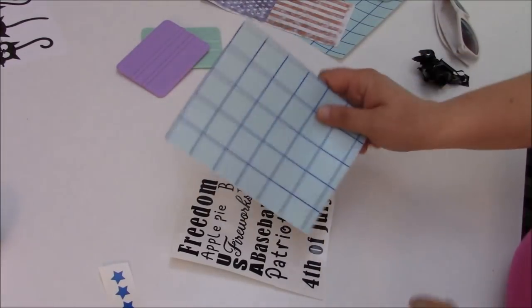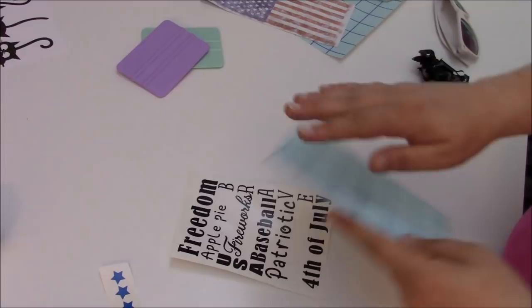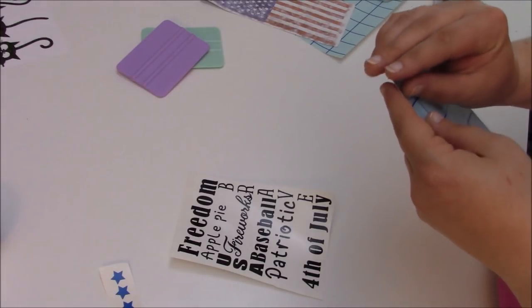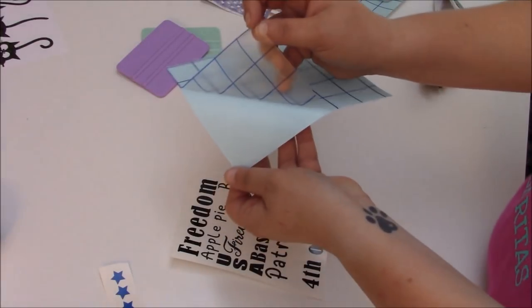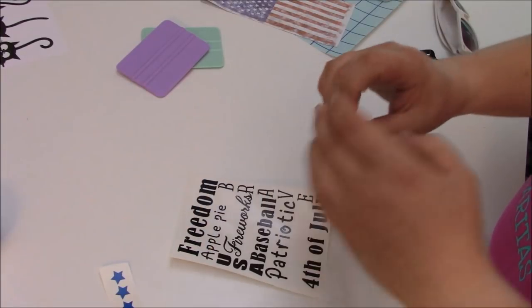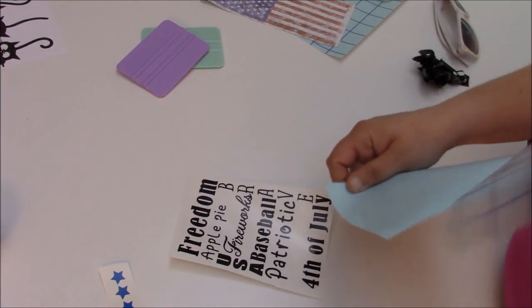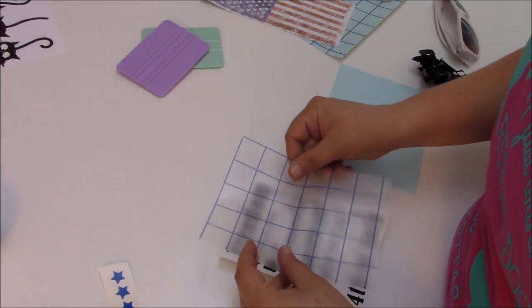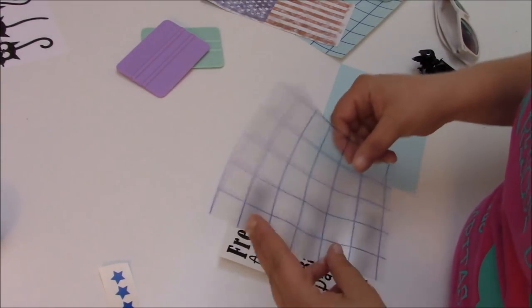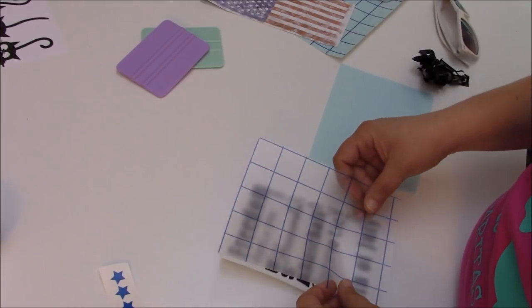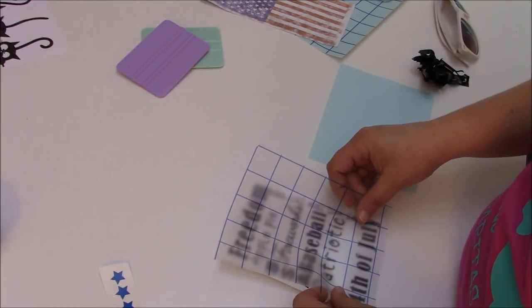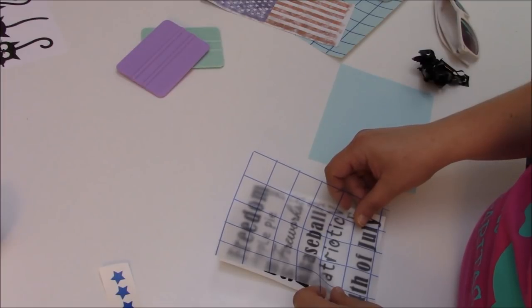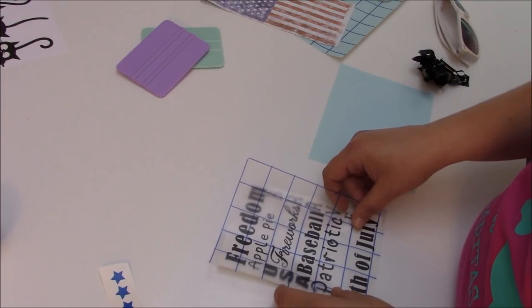For this project we're going to use the blue grid transfer tape. This is a medium tack and it has this nice grid on it. So it makes it a little easier to make sure that your words are straight. You just want to make sure that you line up and the way I do it is I find like the bottom of a grid. And I just pick one of my sections of words. So for this one, I'm going to use Fourth of July.